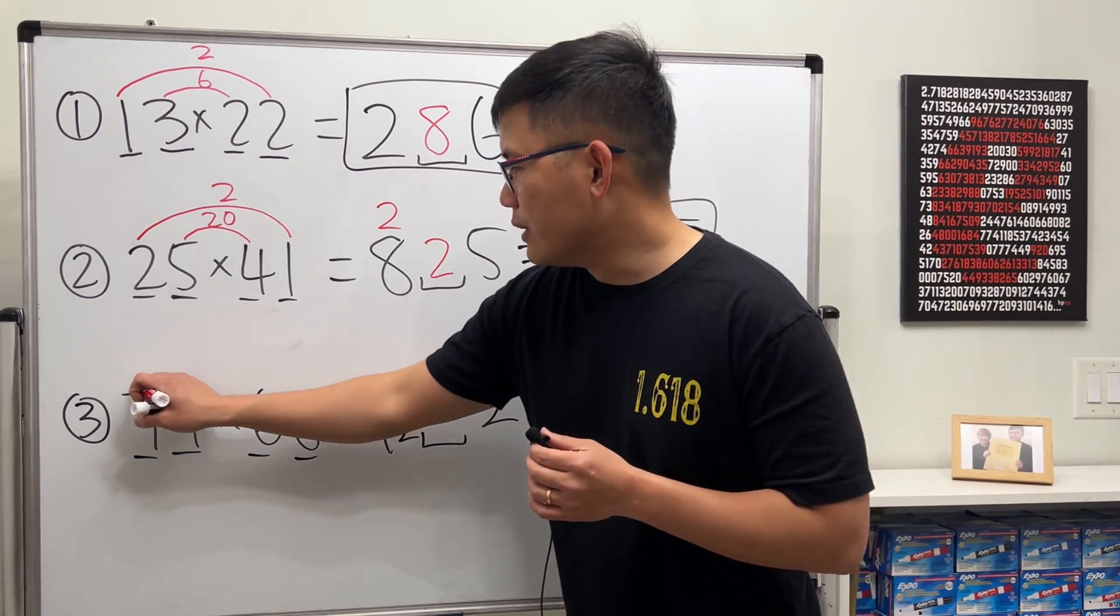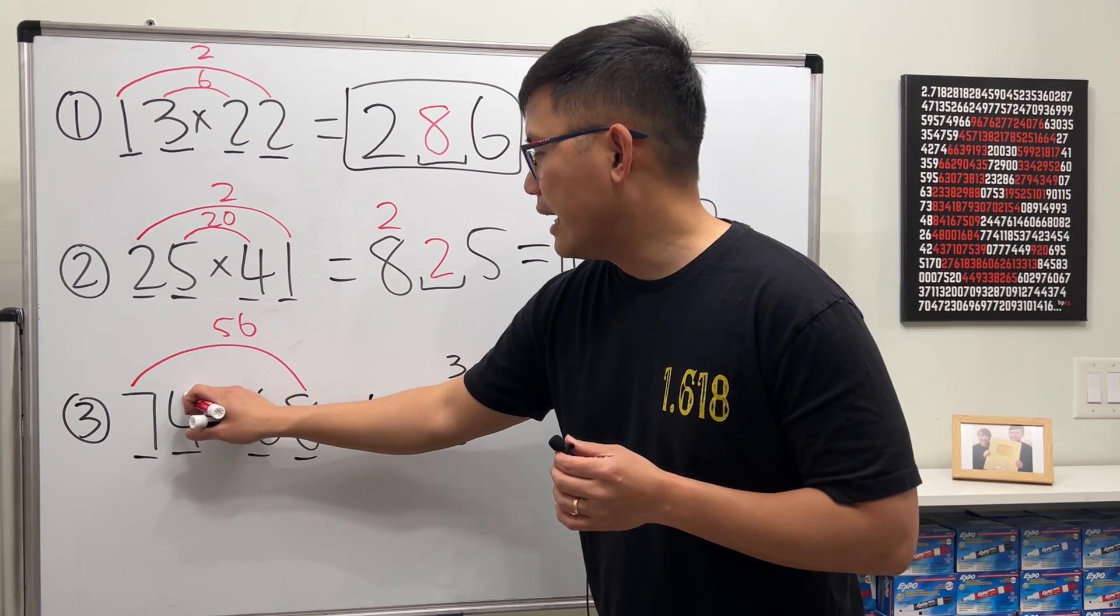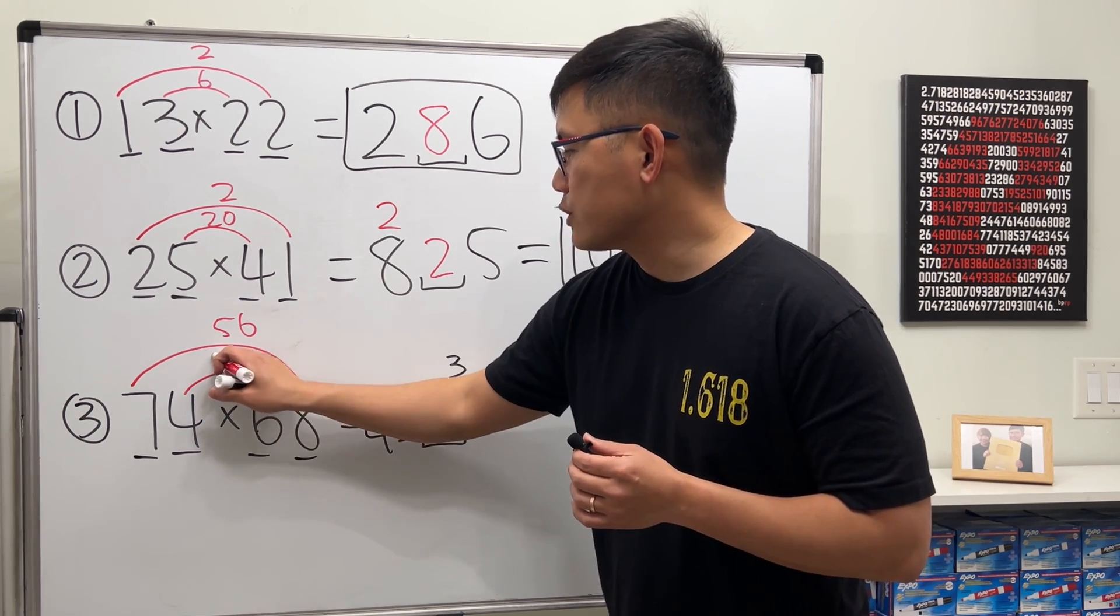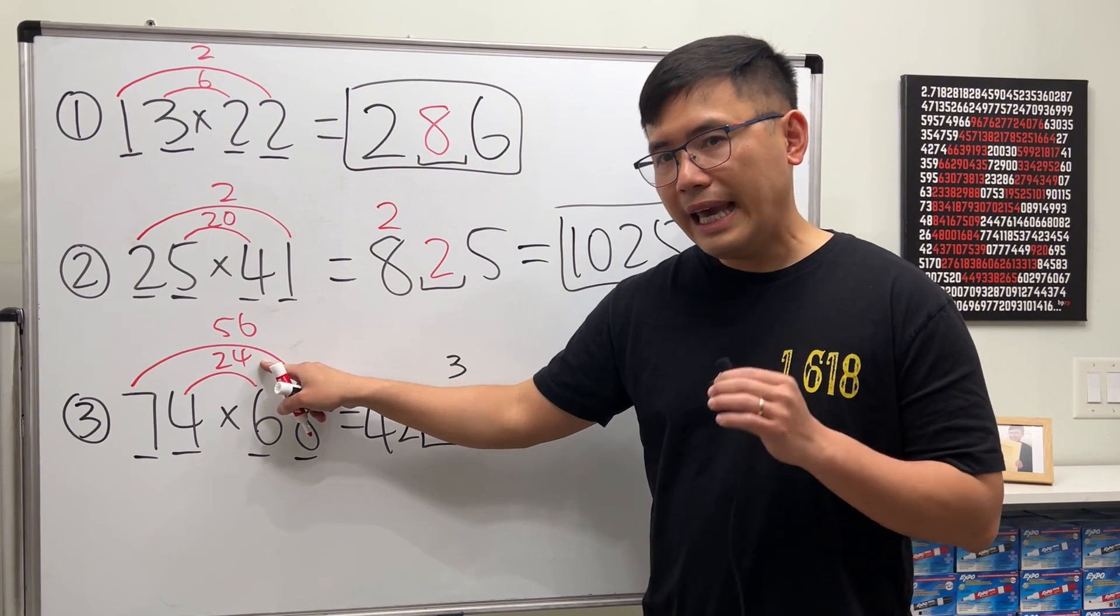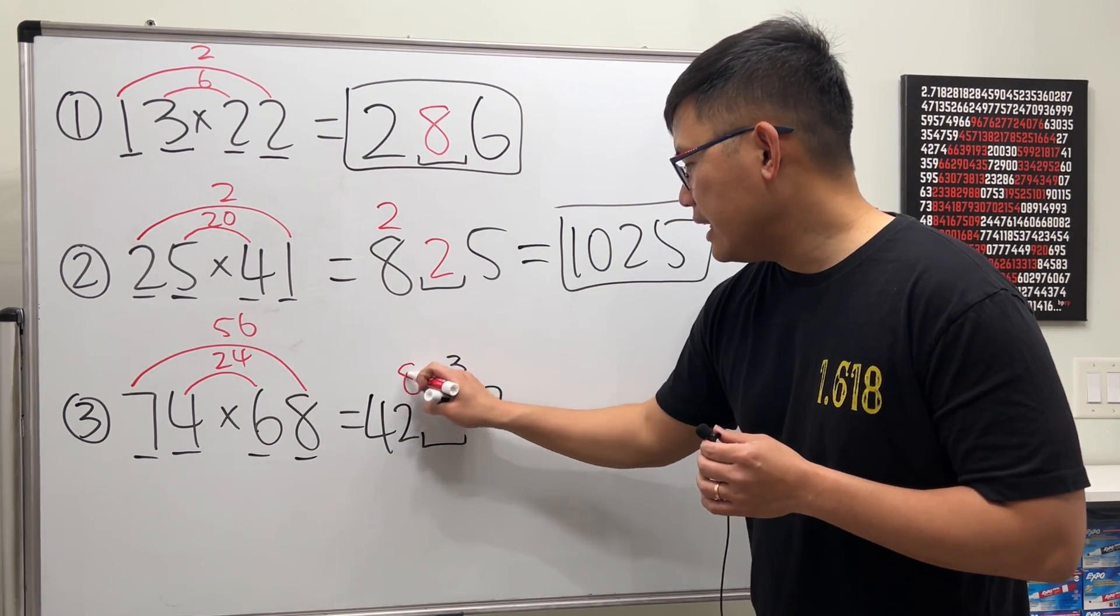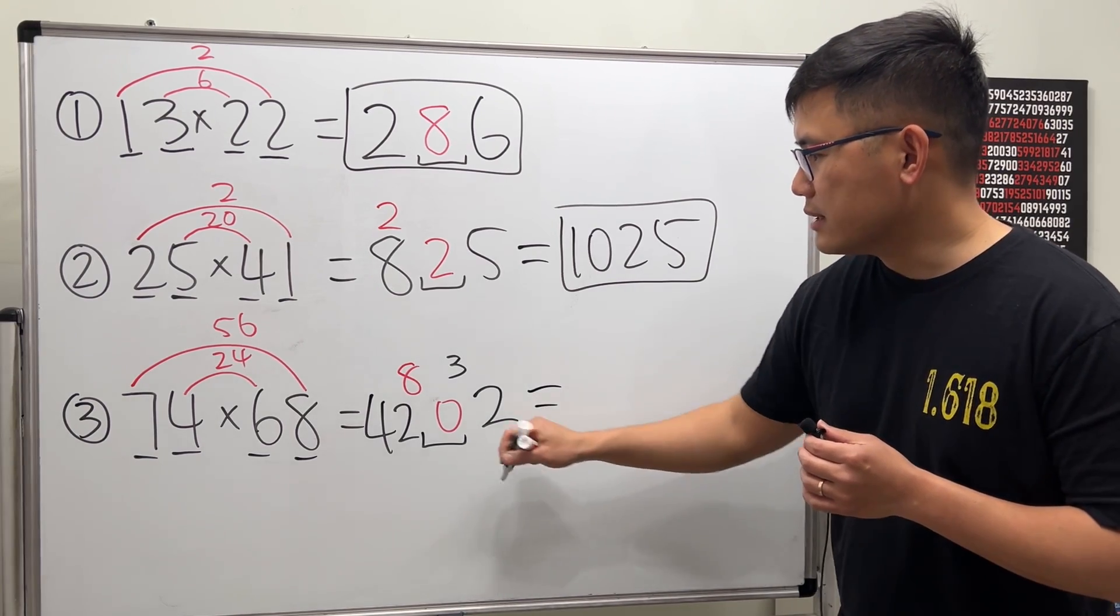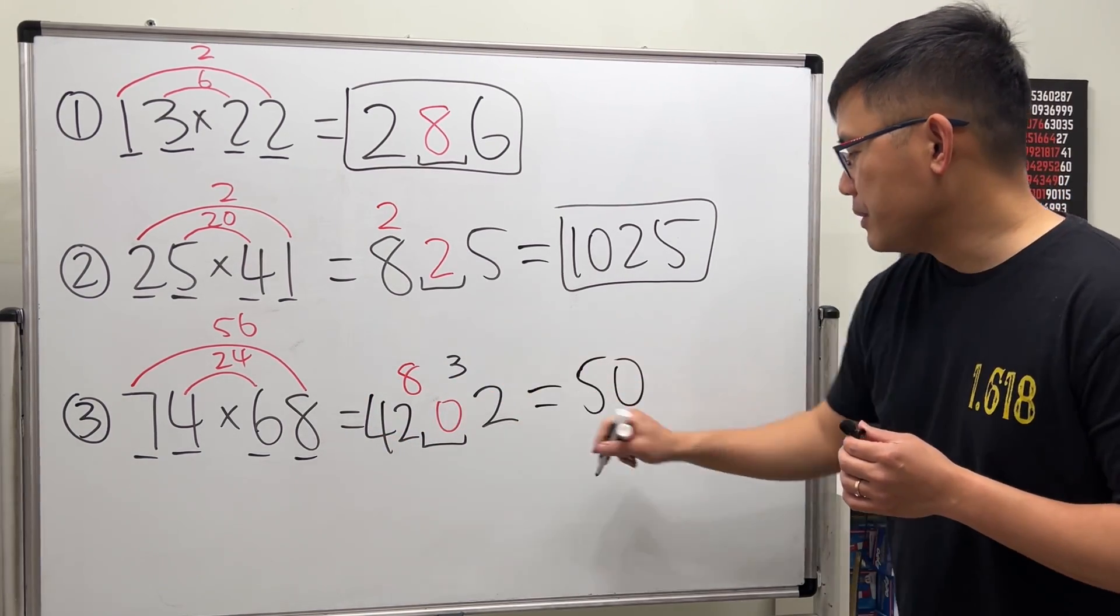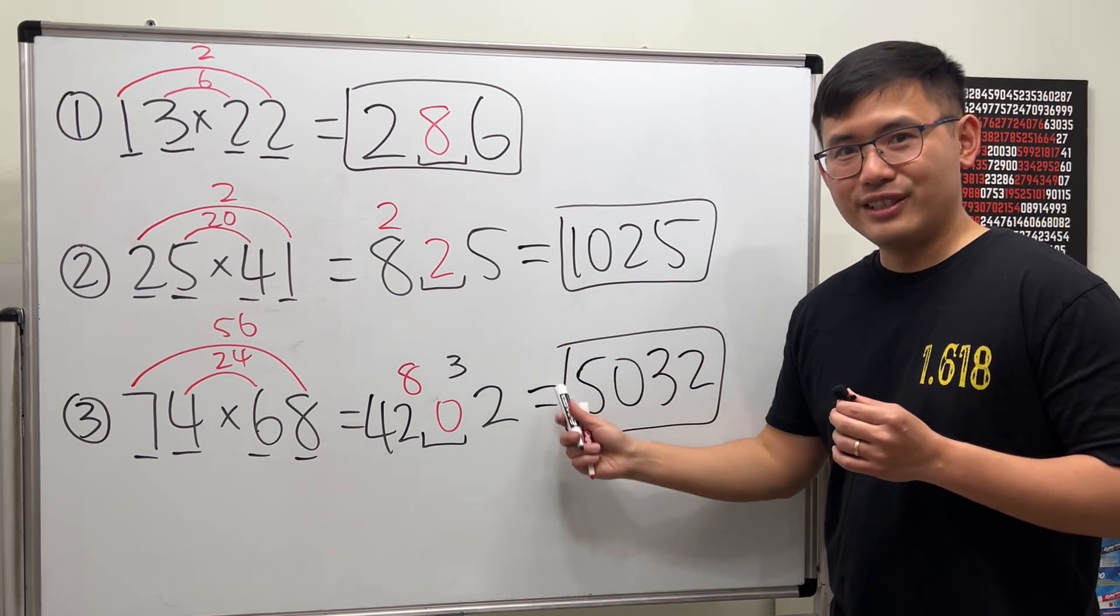Finally, we do 7 times 8 which is 56, and then 4 times 6 which is 24. 56 plus 24 is 80, so we put the 80 down like this. And then we just add them up, so we can see that will be 50 and then that will be 32. So 50 and 32 just like this.